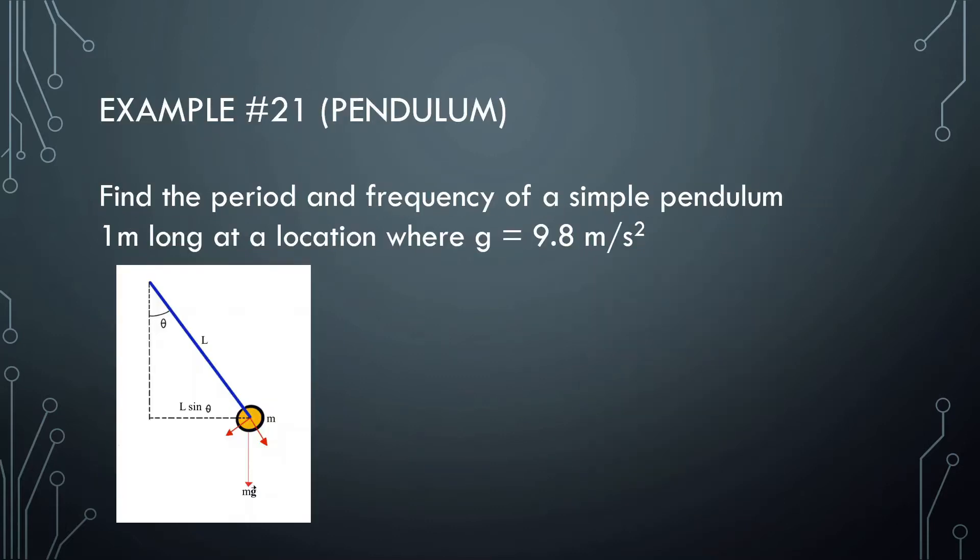Moving on. Find the period and frequency of a simple pendulum one meter long at a location where g = 9.8 m/s². For this problem, we should be looking at the main formula: 2π times the length of the string divided by gravity. Let's just plug in those numbers: length of the string being 1 divided by 9.8. We should get an answer around 2 seconds. That's the period.